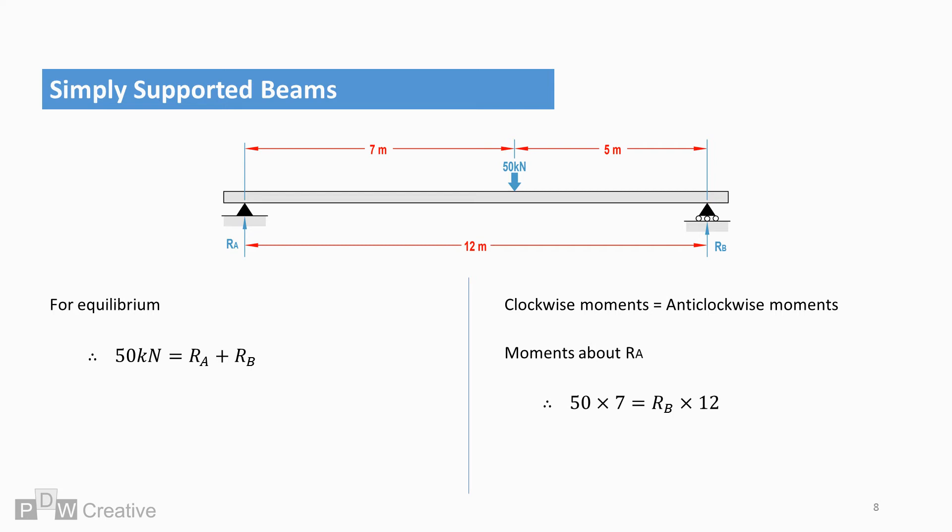Clockwise, so 50 times 7 equals RB times 12. Therefore, after a rework of the equation, RB equals 29.167 kN.